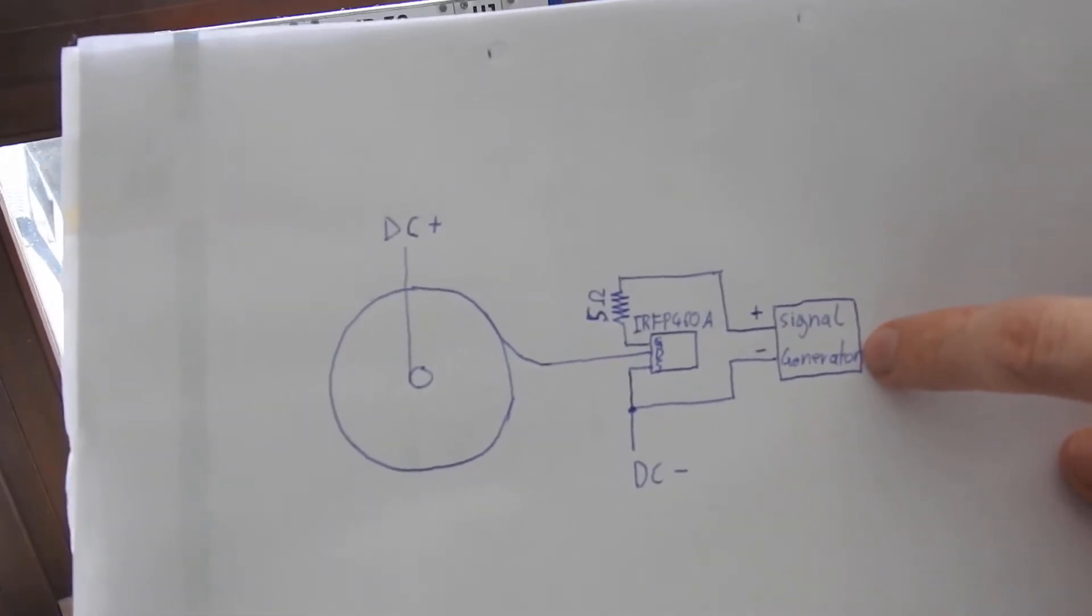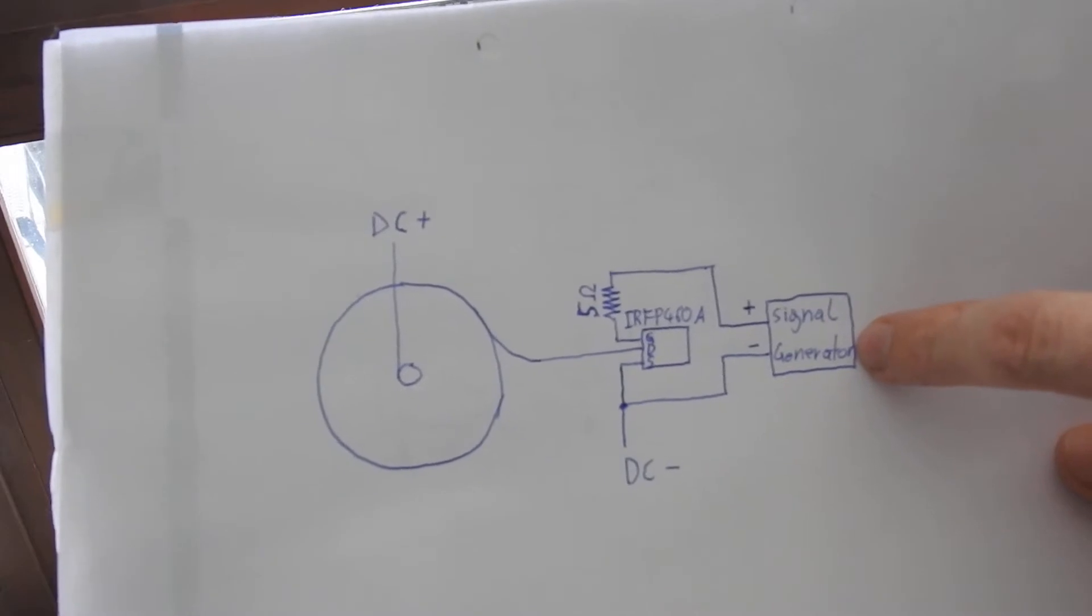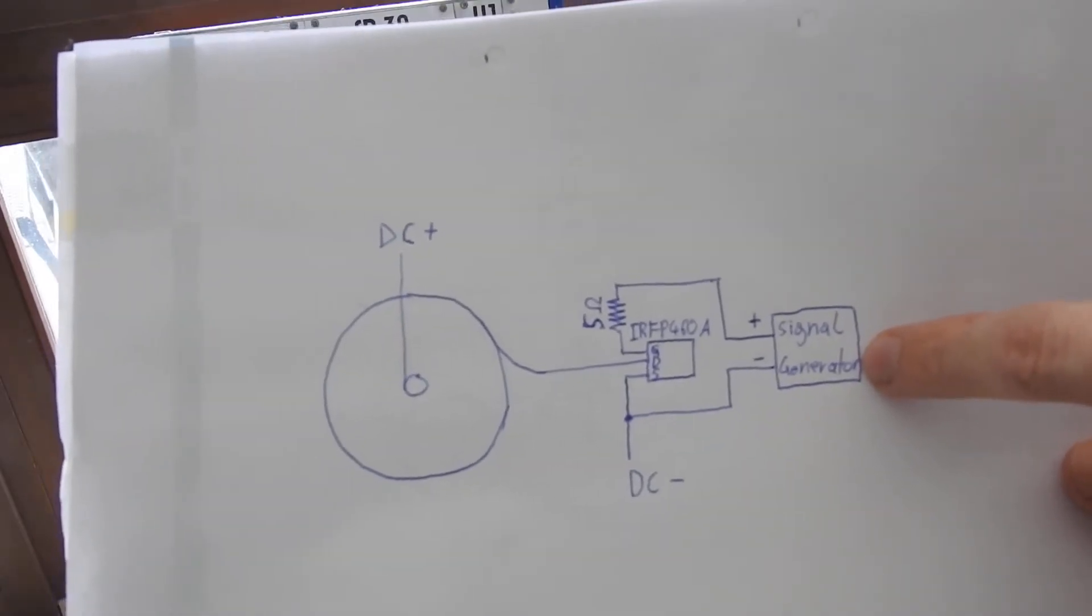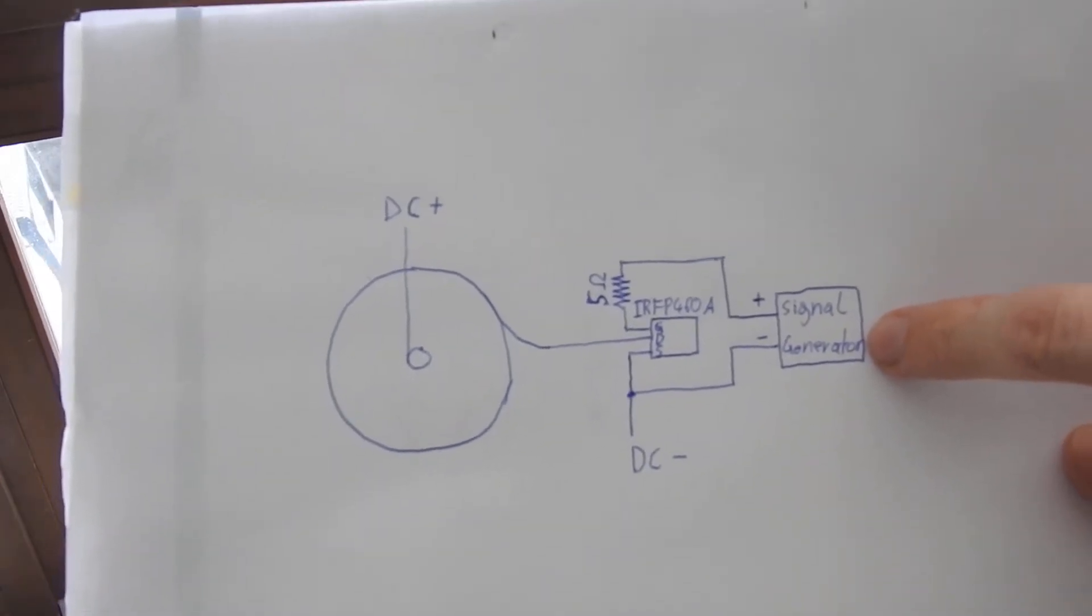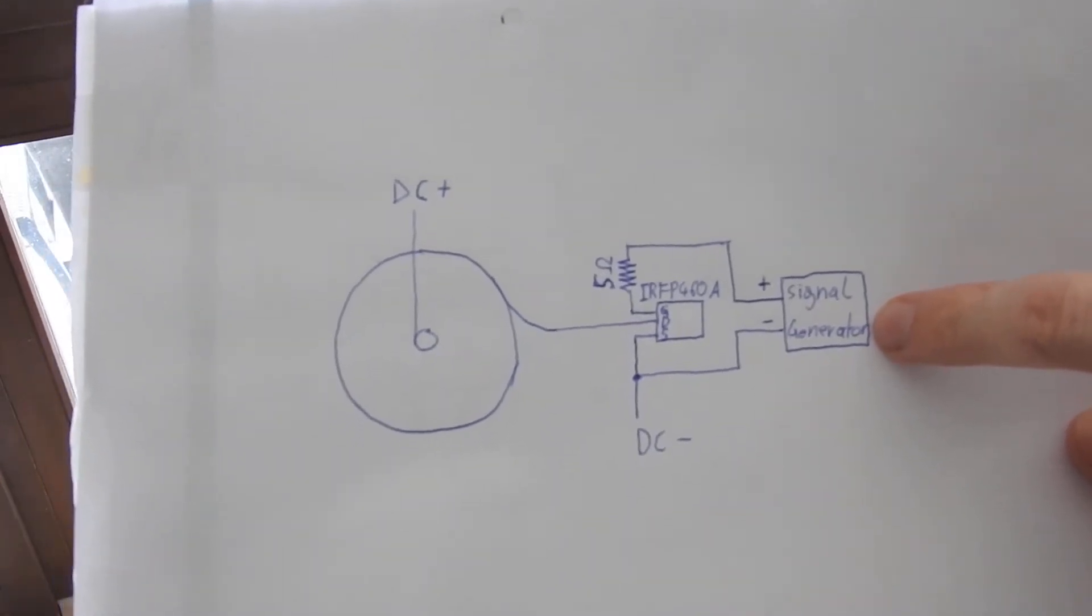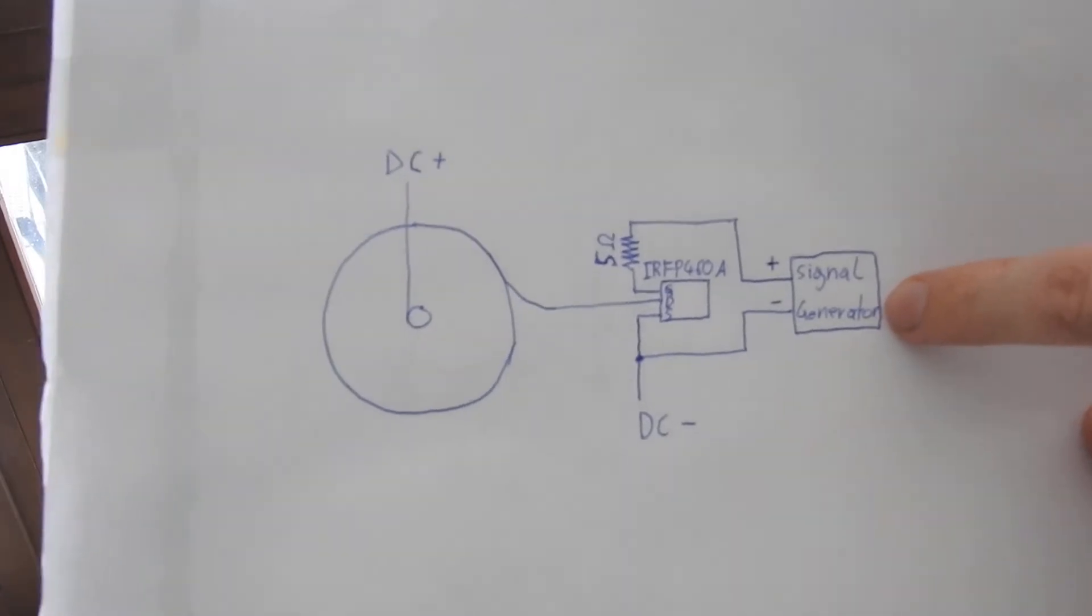From the signal generator there is a square wave signal coming, currently at around 35 to 50 kilohertz, depending on what I try to power.